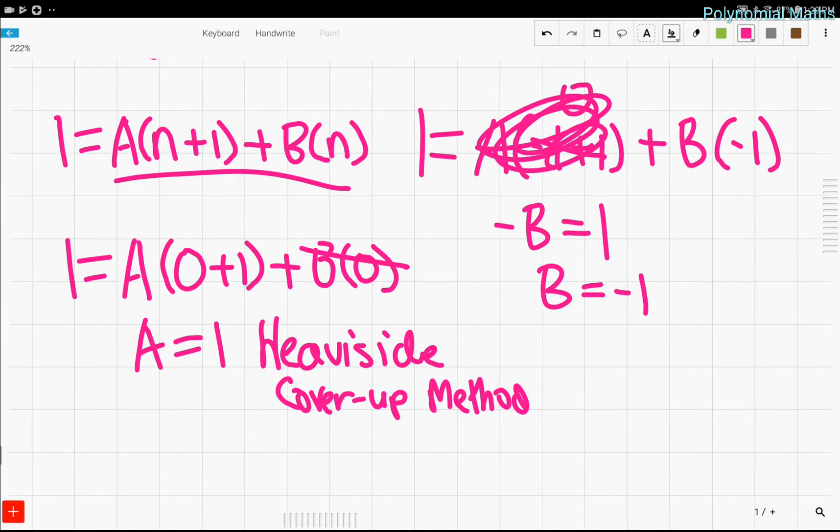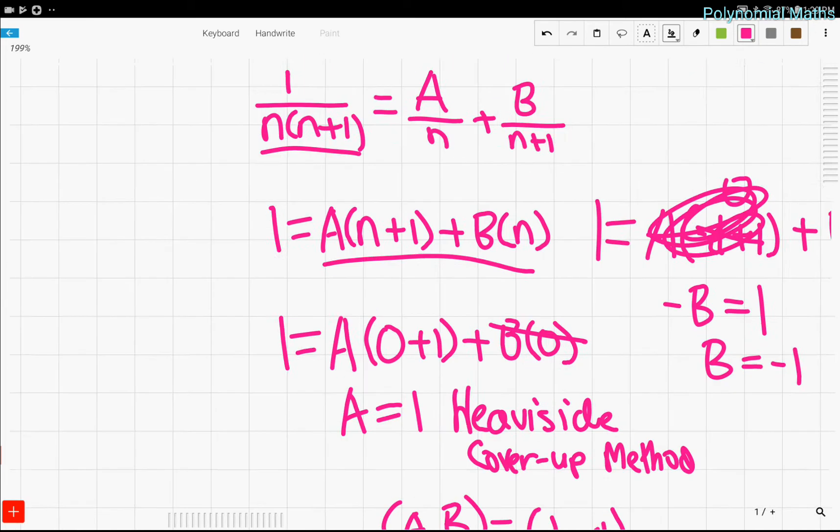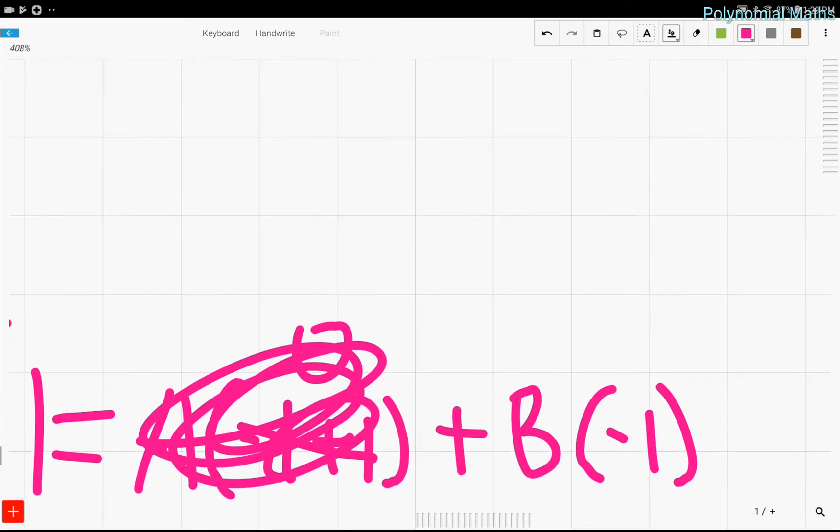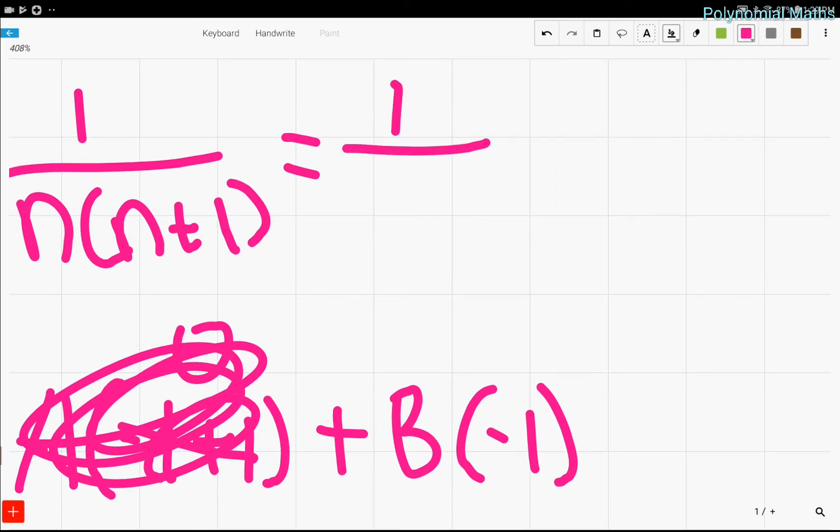And we're done. We've solved for a and b because the coordinate pair (a, b) is just (1, negative 1). So, our solution to this up here, this whole thing, is just 1 over n times (n plus 1) equals 1 over n minus 1 over (n plus 1). And we're basically done because we found the solution. I mean, the partial fraction decomposition.